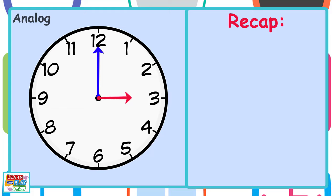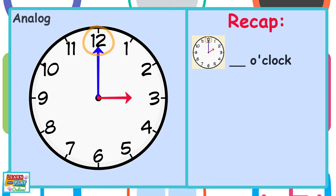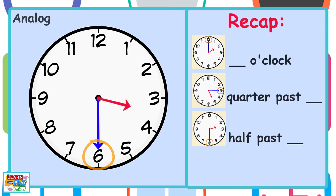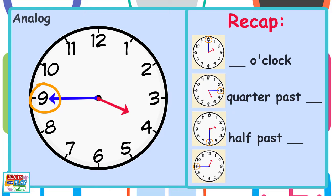When the minute hand is pointing at the 12, we say it is something o'clock. When the minute hand is pointing at the 3, we say it is quarter past something. When the minute hand is pointing at the number 6, we say it is half past something. And lastly, when the minute hand is pointing at the number 9, we say it is quarter to something.